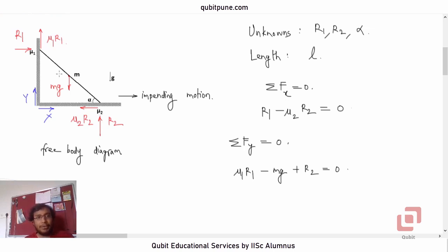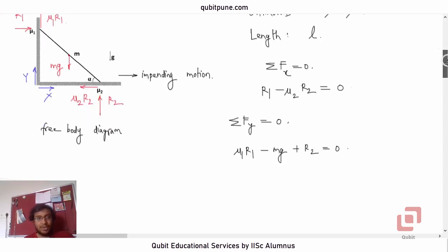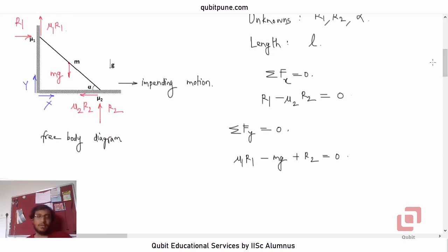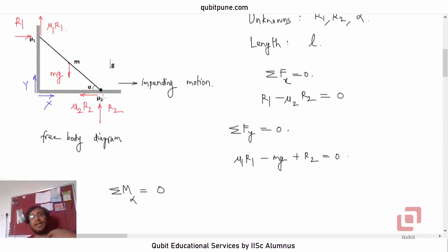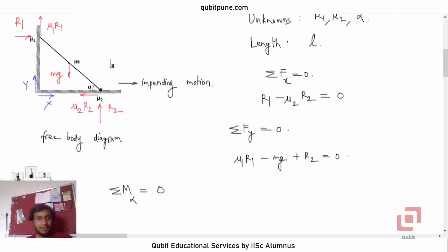Because the rod has significant length, we cannot ignore the moment equation — it is not a point object. Let us choose a convenient point to take moments. We take moments about the bottom contact point with the floor. At that point, μ2·R2 and R2 both act there, so their lines of action pass through it and they produce no moment. We only need to consider the moments of the remaining forces.